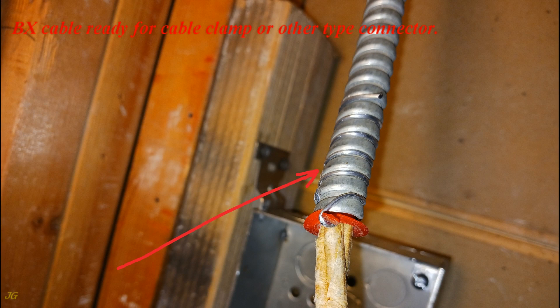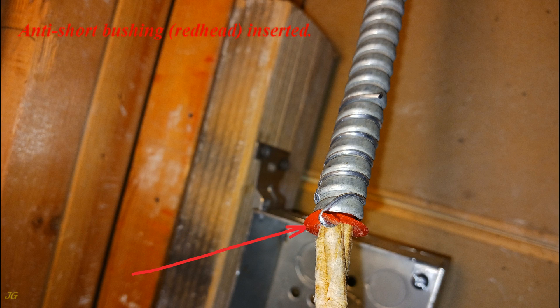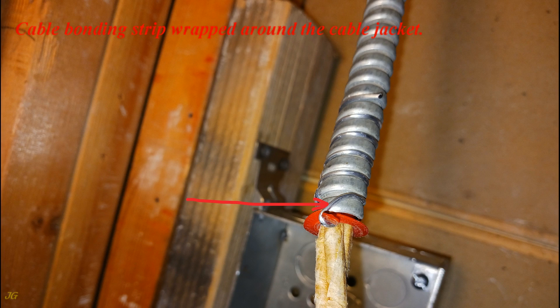BX cable ready for cable clamp or other type connector. Anti-short bushing redhead inserted. Cable bonding strip wrapped around the cable jacket.